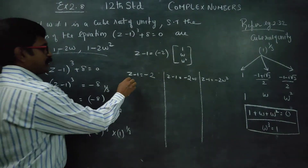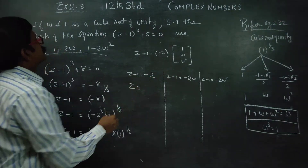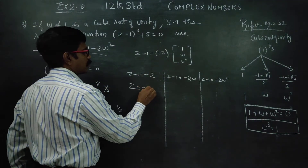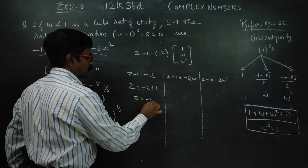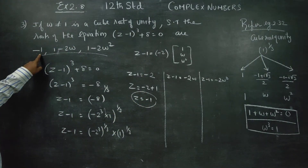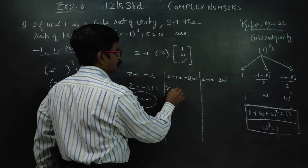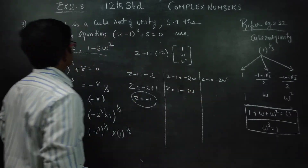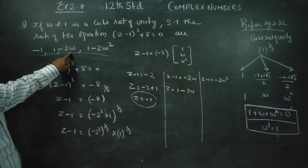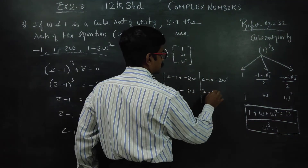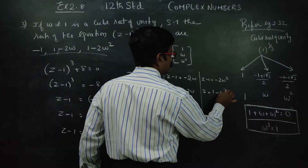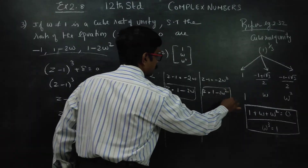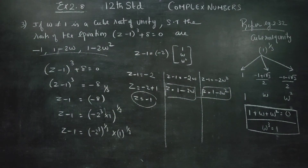So in the sum, find the values of Z. The solutions are 3. Z is equal to 1 plus minus 2, which is minus 1. Next, Z is equal to 1 plus minus 2 omega, which is 1 minus 2 omega. Z is equal to 1 plus minus 2 omega square, which is 1 minus 2 omega square. This is the second answer and this is the third answer.